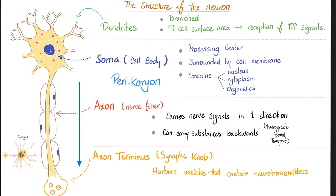The axon carries nerve signals in one direction, downward to the axon terminus. Retrograde axonal transport goes in the opposite direction — not transmitting nerve signals, but transmitting chemicals and substances back up to the soma, because the soma is the mastermind.